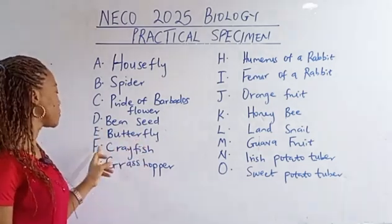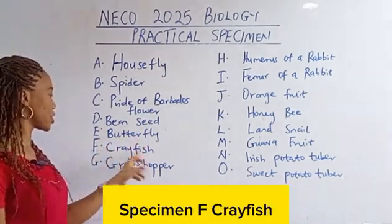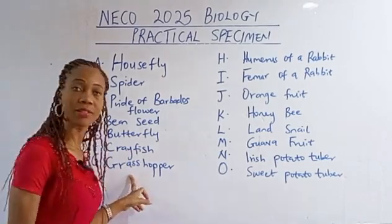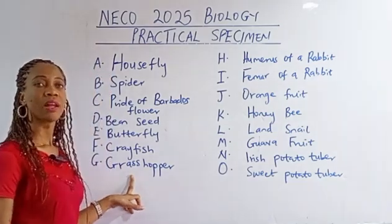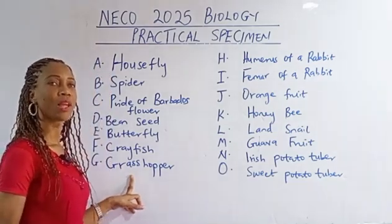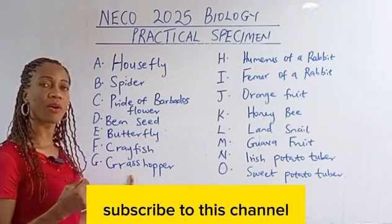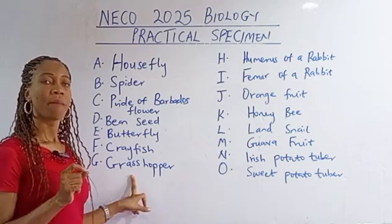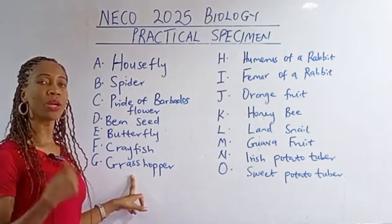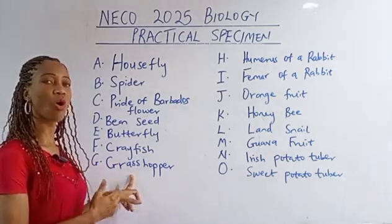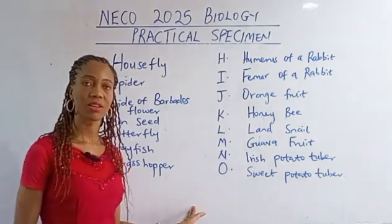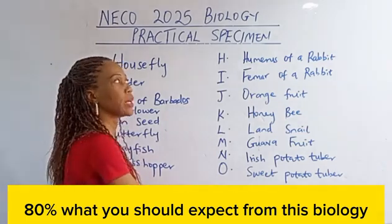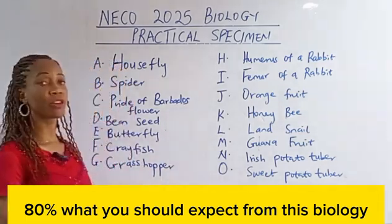Specimen F is crayfish, specimen G is grasshopper. Please like this video, subscribe to this channel and turn on the bell notification, because I'll be doing videos to guide you on likely questions and what you should expect from this Biology 2025 NECO practical exam.